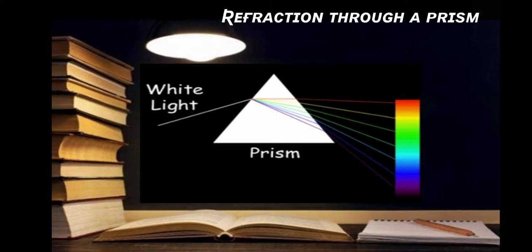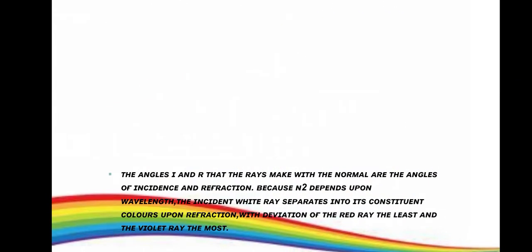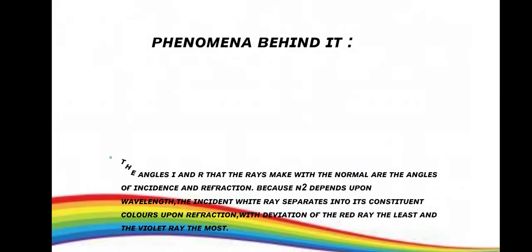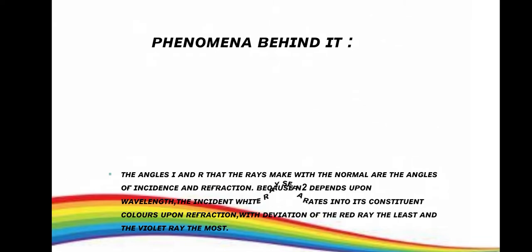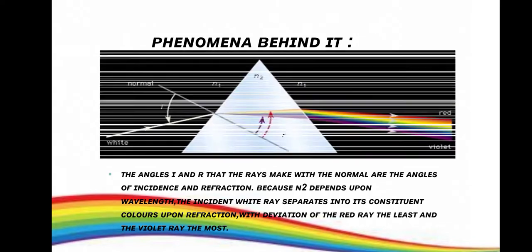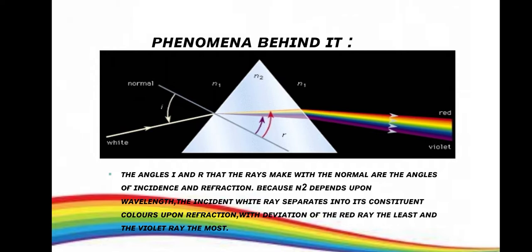Refraction through a prism. The angles I and R that the rays make with the normal are the angles of incidence and refraction. Because N2 depends upon wavelength, the incident white ray separates into its constituent colors upon refraction, with deviation of the red ray the least and the violet ray the most. We can see in the diagram that violet light bends the most and red the least.